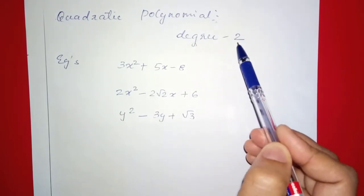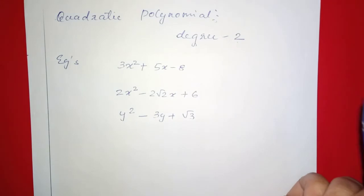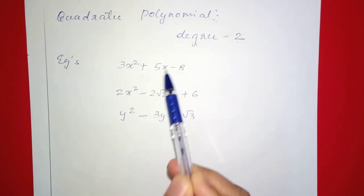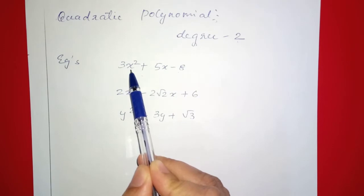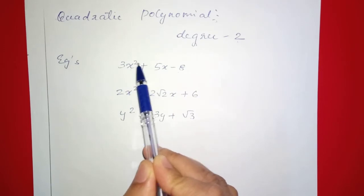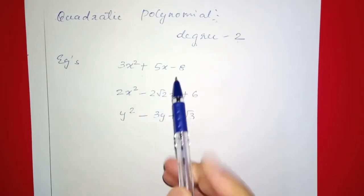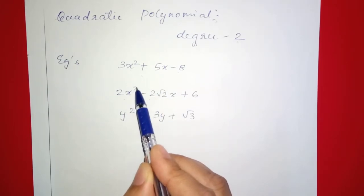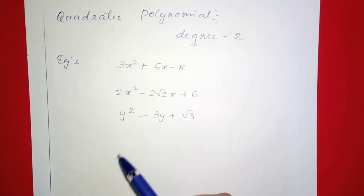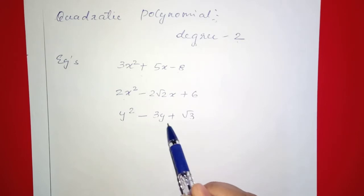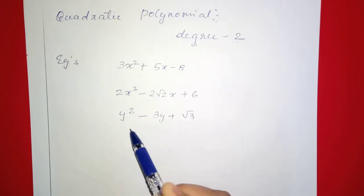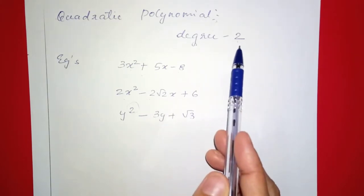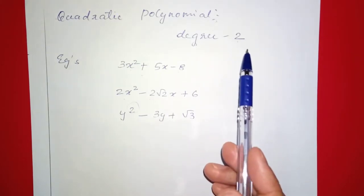What is a quadratic polynomial? We have quadratic polynomials. Here it is: 3x squared plus 5x minus 8. The highest power of x is 2, so the degree of this polynomial is 2. Next one: y squared minus 3y plus root 3. The highest power is 2, therefore the degree of this polynomial is 2 — it is a quadratic polynomial.